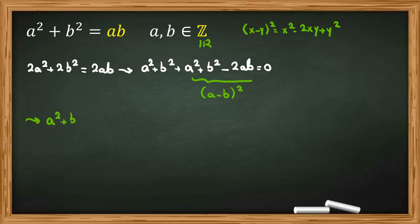So a² + b² + (a - b)² = 0, and this idea is so useful in many examples.